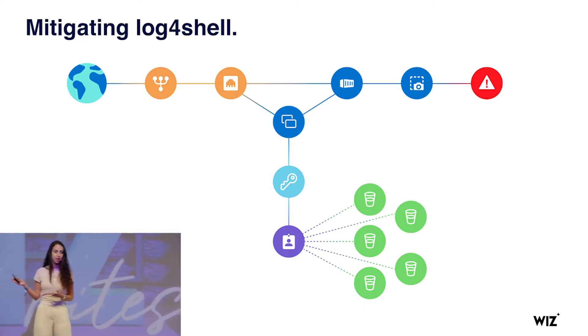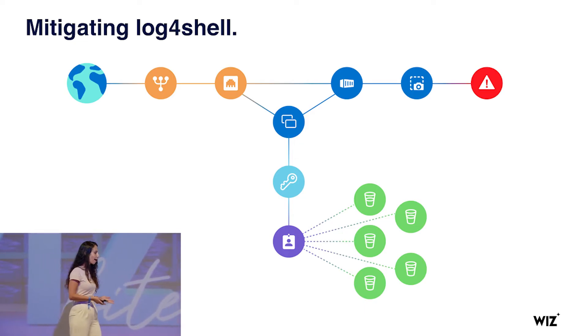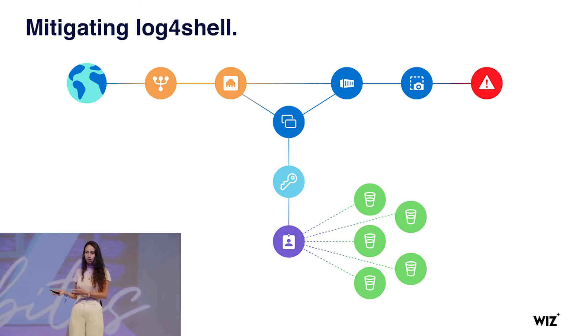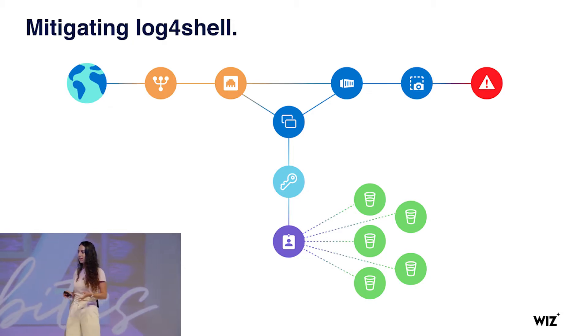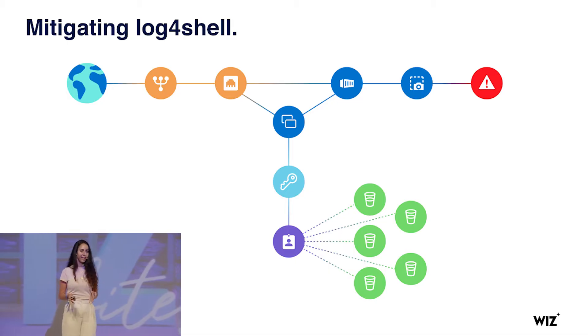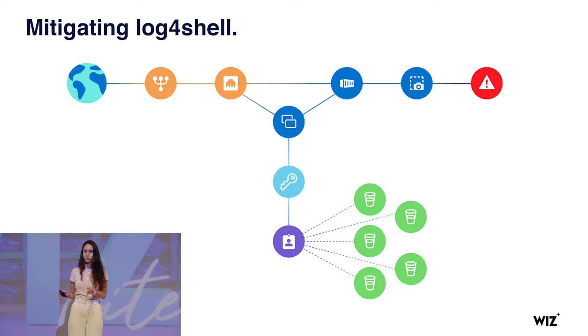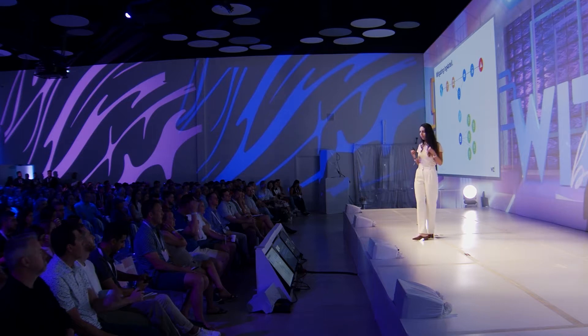Let's imagine you're a CISO at a company and log4shell is disclosed, roughly a week before Christmas. You need to build a mitigation plan. As a CISO, I want to know if there are points of risk in my organization that need to be mitigated right away. Like the example on the graph here — my worst fear would be a publicly exposed container that's vulnerable to log4shell, running on a resource with high privileges in my cloud. How do I quickly reduce risk? I want to start by mitigating things that are an immediate threat.